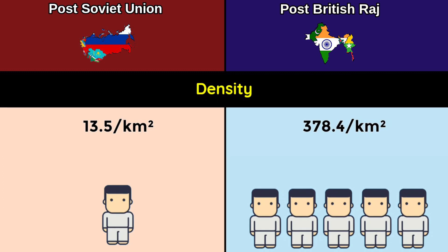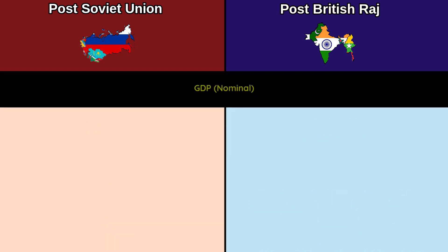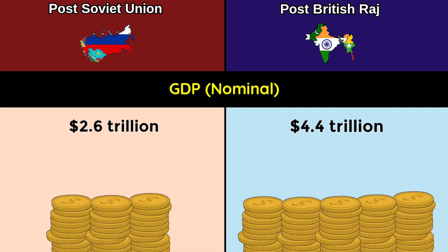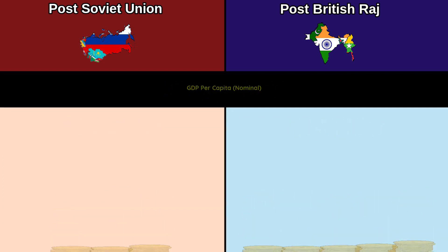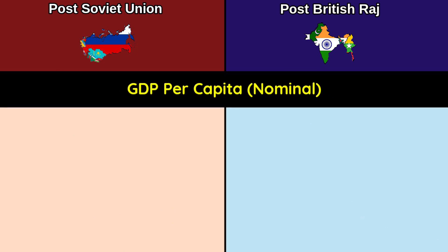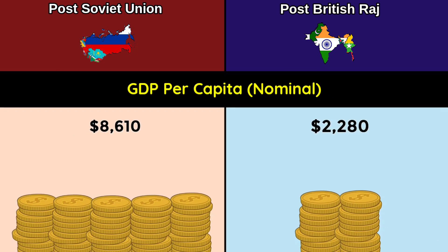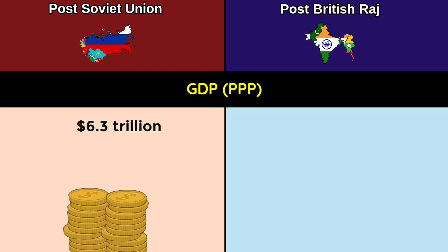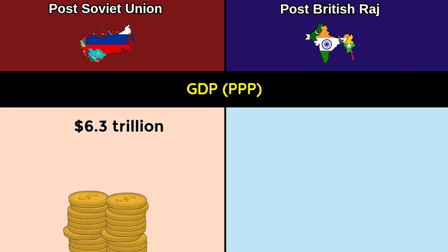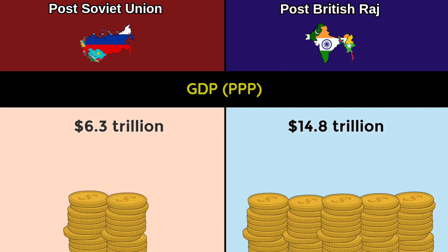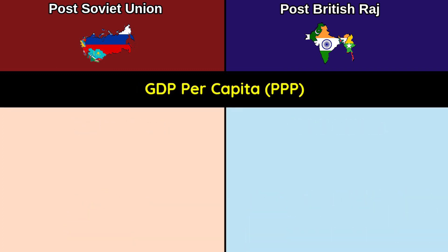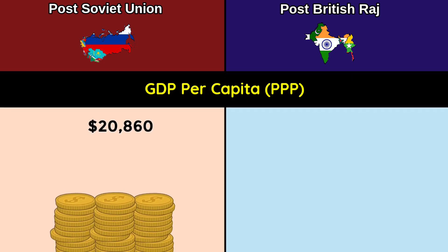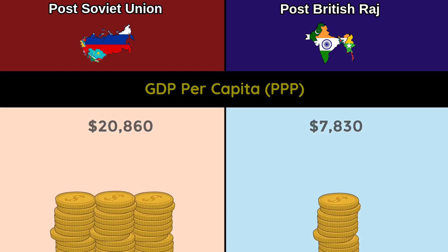GDP nominal: $2.6 trillion versus $4.4 trillion. GDP per capita: $8,610 versus $2,280. GDP PPP: $6.3 trillion versus $14.8 trillion. GDP per capita PPP: $20,860 versus $7,830.